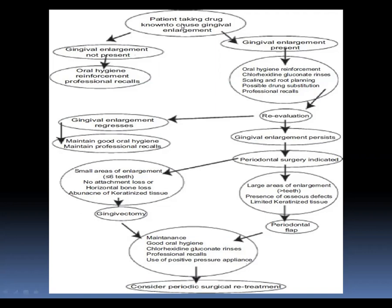When a patient comes in taking a drug known to cause gingival enlargement, first check the oral cavity. If enlargement is not present, explain why maintenance of oral hygiene is very important for them. If enlargement is seen, reinforce oral hygiene, give chlorhexidine gluconate rinses, do scaling and root planing, and if necessary, consider drug substitution. Re-evaluate after 2 to 3 months. If enlargement regresses, ask the patient to maintain oral hygiene and professional recall. If enlargement persists, assess the area — small area without bone loss allows gingivectomy; larger enlargement with bone loss requires periodontal flap surgery. Maintenance is a very important part of long-term management.